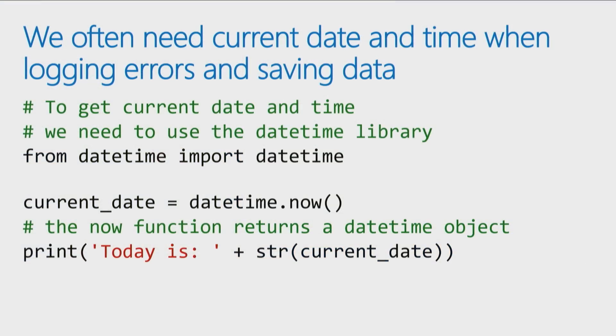The most common thing we need when working with dates is simply the current date and time. We use this a lot when we're logging errors or saving records in databases. We want to know when it was saved, when that record was written, or when something happened.